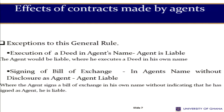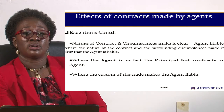However, there are instances where even though the agent may have informed the third party that he is acting for a particular principal, if he enters into a deed and signs it in his own name, the position changes — he will be held personally liable. Similarly, when he signs a bill of exchange in his own name without disclosing that he signed as an agent, he would also be held liable. These are the exceptions to that rule.